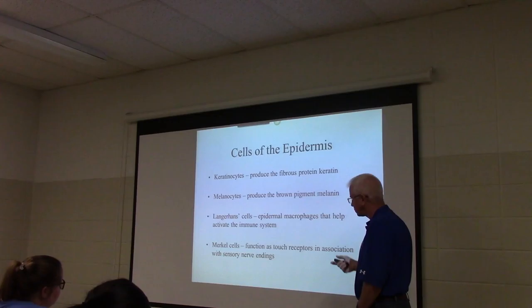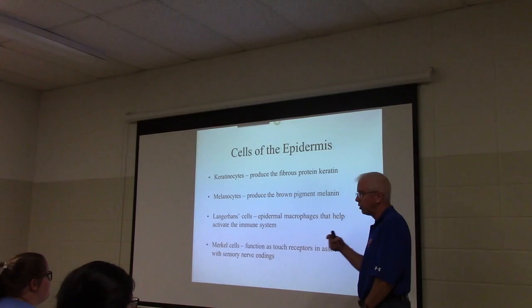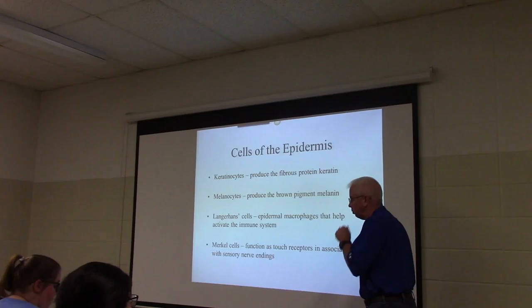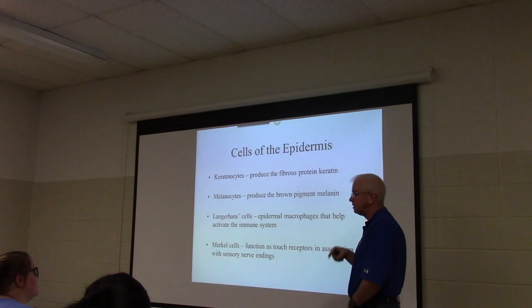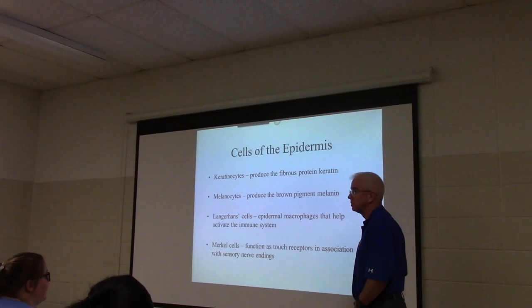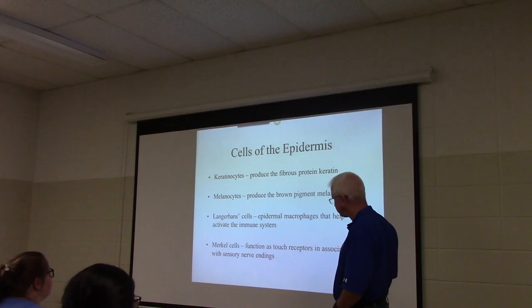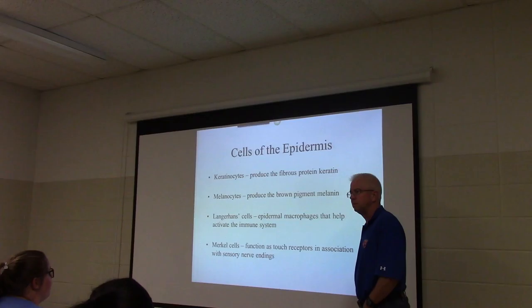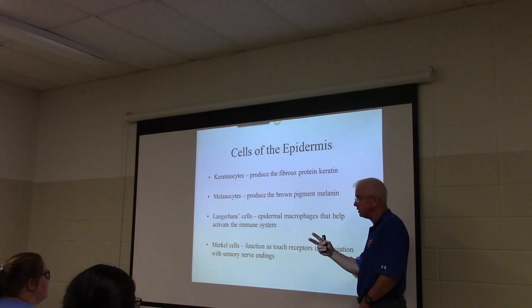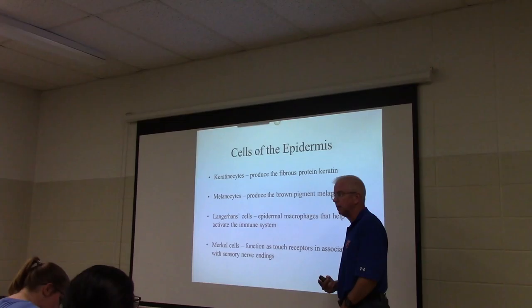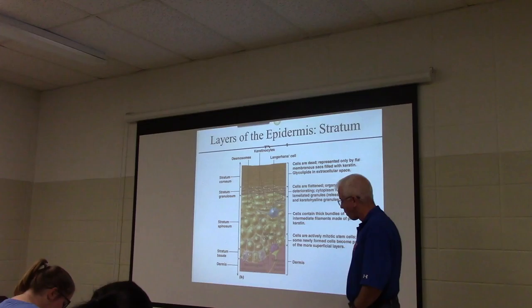The Langerhans cells are epidermal macrophages. Does the brain have resident macrophages? Yes — they're called microglial cells. Does the outer layer of skin have resident macrophages? Yes, and they are called Langerhans cells. Merkel cells are thought to be touch receptors. The epidermis is avascular but innervated — the two pieces of innervation are free nerve endings and Merkel cells in the basal layer.